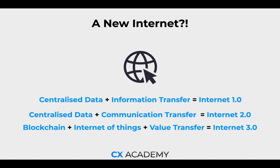The new Internet — Internet 3.0 — is going to utilize blockchain technology to actually decentralize data, which has always been centralized. We're going to mix in the Internet of Things with our blockchain. This is essentially a value transfer Internet. We've gone from information transfer, to communication transfer, and now we're looking at a value transfer. We're going to learn how tokens and our token economy fit in with this value transfer of the Internet.